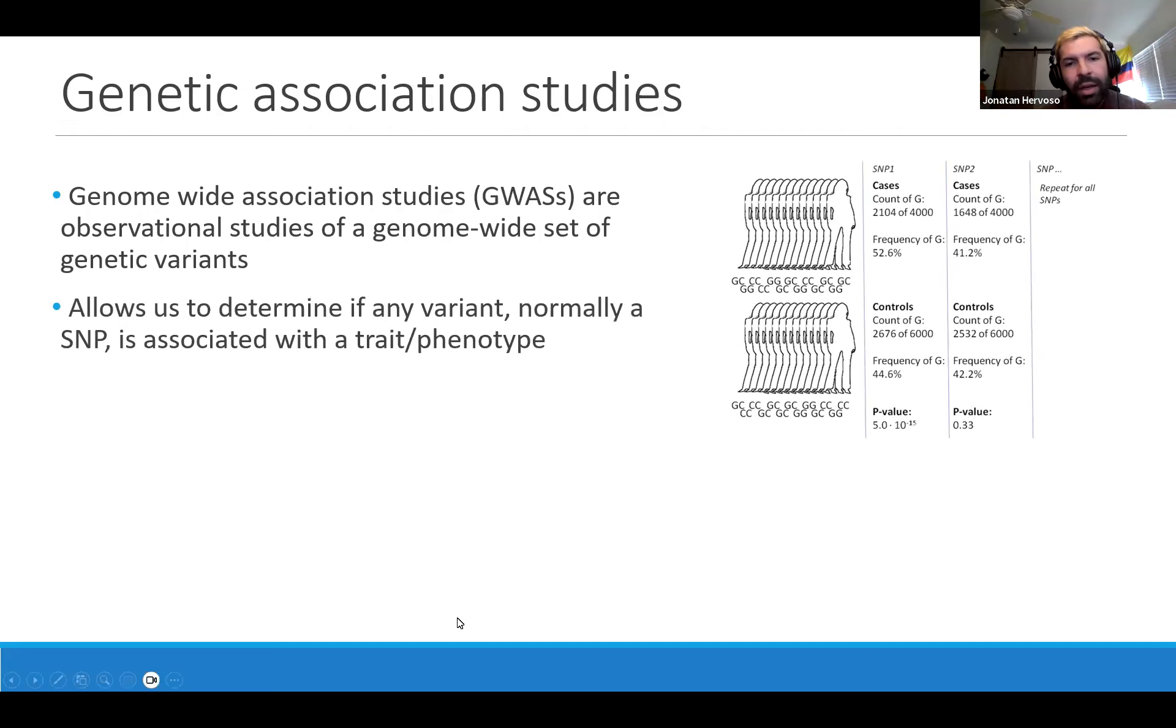In this example, the top row shows the cases, the bottom row shows the controls. For this first SNP, we can see that the frequency is different between the cases and the controls, which tells us that the frequency of the SNP might be related to the trait we're interested in studying.